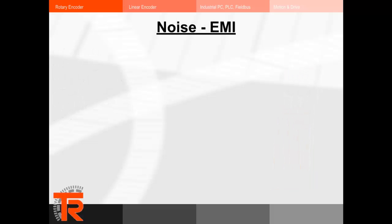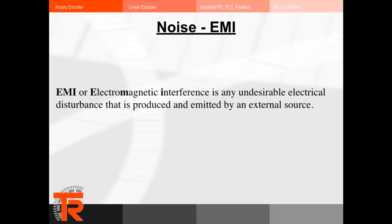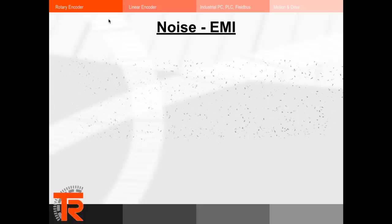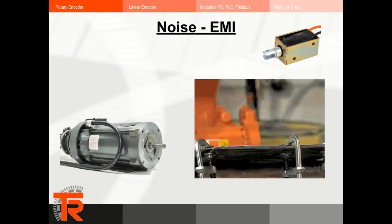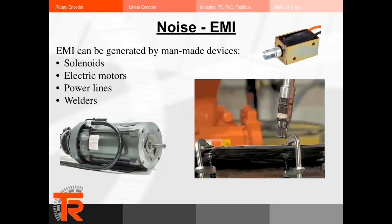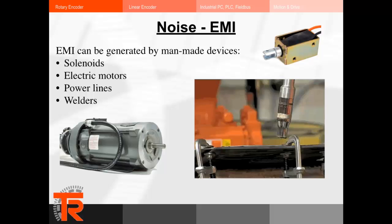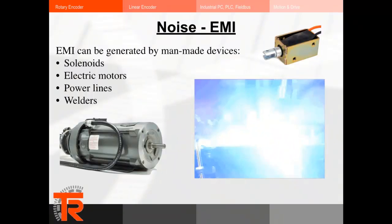Noise and EMI. What is EMI? EMI, or electromagnetic interference, is any undesirable electrical disturbance that is produced and emitted by an external source. EMI can be generated by man-made devices like solenoids, electric motors, power lines, and welders. All of these devices can wreak havoc on encoder position feedback.